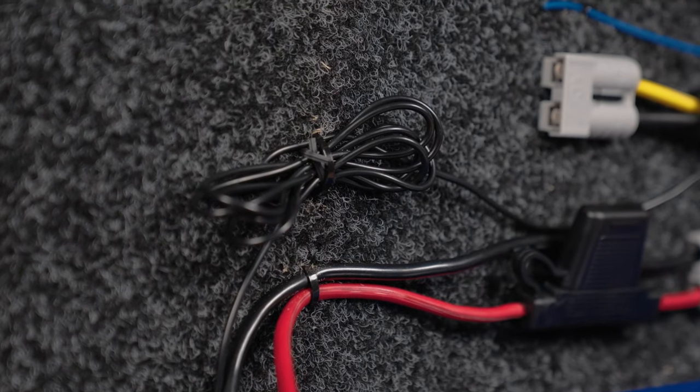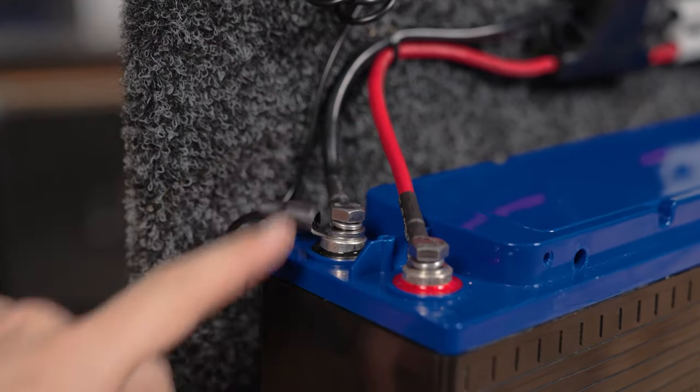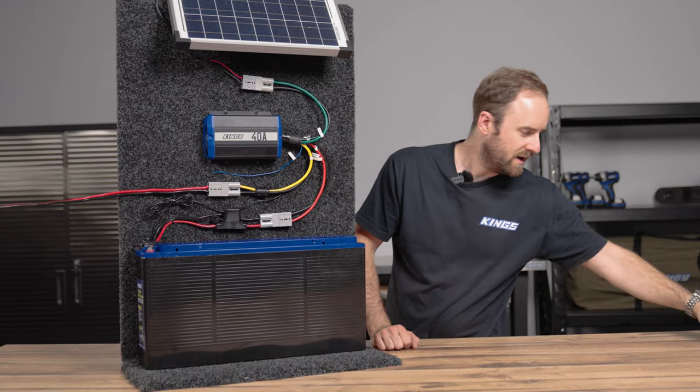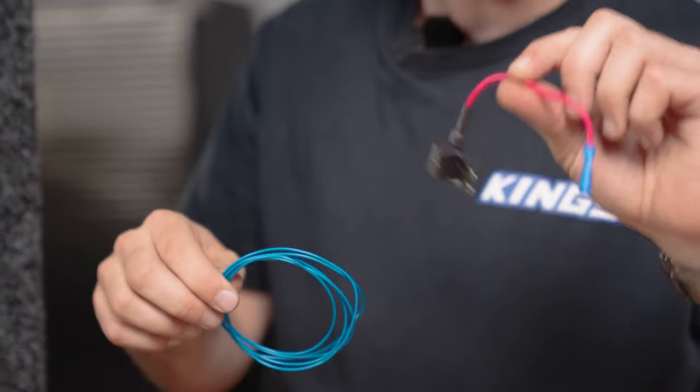Then there's the extra wires. You've got your 2-meter-long temperature sensor that connects directly up to that negative terminal. And of course, the ignition wire, which we would typically extend with some extra wire, and then tie into a fuse in your